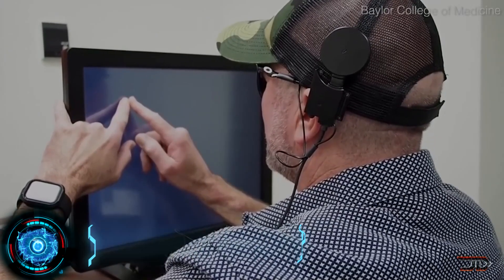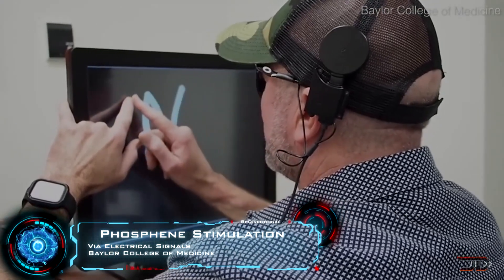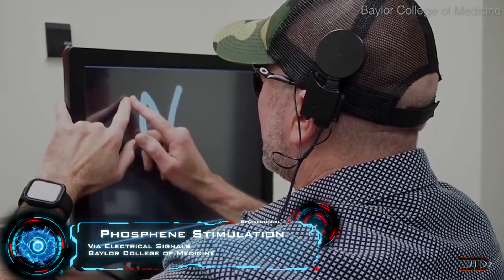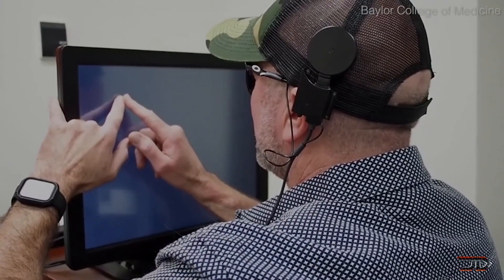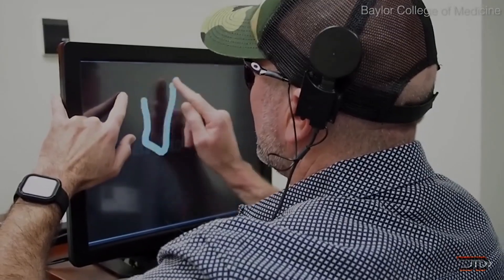Another example of added visual perception involved non-invasive stimulation. This particular team drew letters of the alphabet onto a blind patient's mind by giving them specific patterns of electrical currents. These patterns caused the patient to see letters in their mind's eye, and this was done by varying the activation of multiple points.